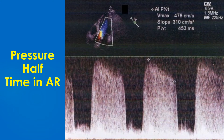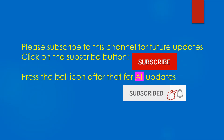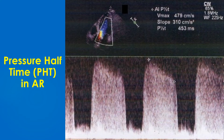The picture demonstrates measurement of pressure half time of the aortic regurgitation jet using continuous wave Doppler from the apical 5-chamber view. The apical 5-chamber view with colour Doppler is seen in the upper left corner of the image. The Doppler cursor is seen passing through the left ventricular outflow tract and aorta, with the aortic regurgitation jet seen as the positive tracing above the baseline.